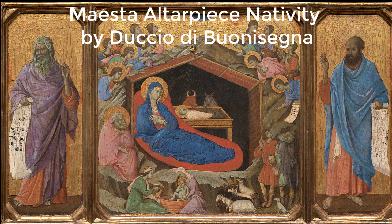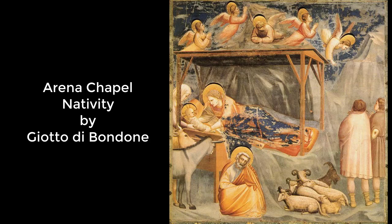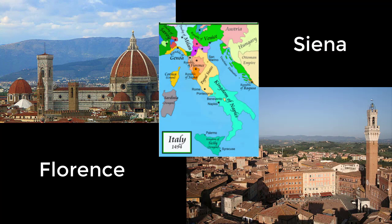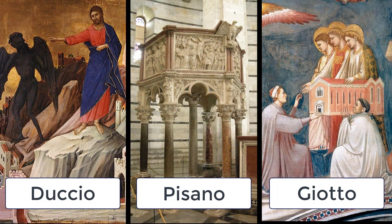The Duccio Maesta Altarpiece Nativity is the subject of our tour of nativity art for today. In the last article, we examined a work by Giotto, who was a contemporary of today's artist Duccio. Giotto represented the city-state of Florence, while Duccio was the rock star of Siena. Both men were familiar with each other's art, as well as with the sculptures of Nicola Pisano.